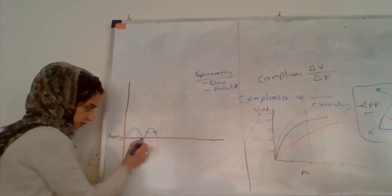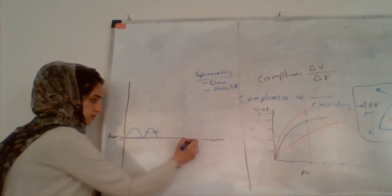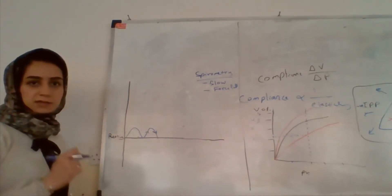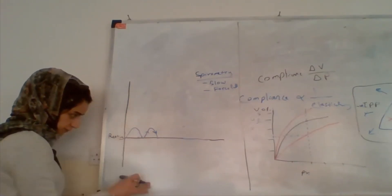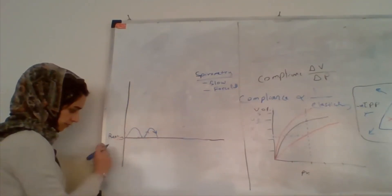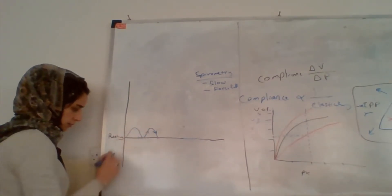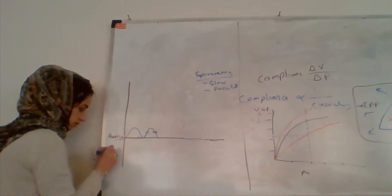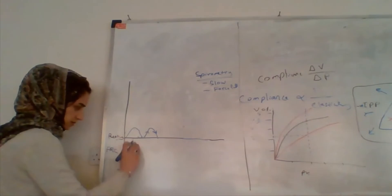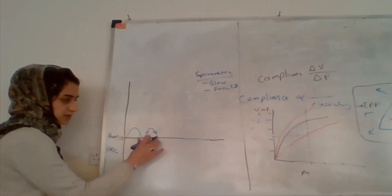Of course, after expiration we come to this point and inspiration starts here. What is this point? This is the resting state of the lung. The volume of air in the lung at the resting state — when we do normal expiration — is called functional residual capacity. This is the air remaining in the lung at resting state.